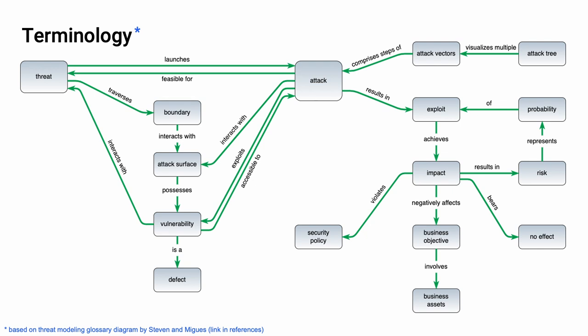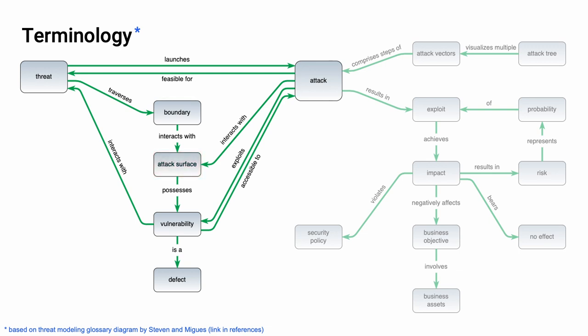In any technical discussion, if you can't agree on terms, discussion doesn't get very far very fast. Here's the terminology as used within the context of the AVCDL. This terminology is based on the threat modeling glossary proposed by Stephen and Maguez. You'll notice that it has two distinct halves. We're going to concentrate on the left half, specifically the attack surface piece, and look at the relationship it has with the things around it.